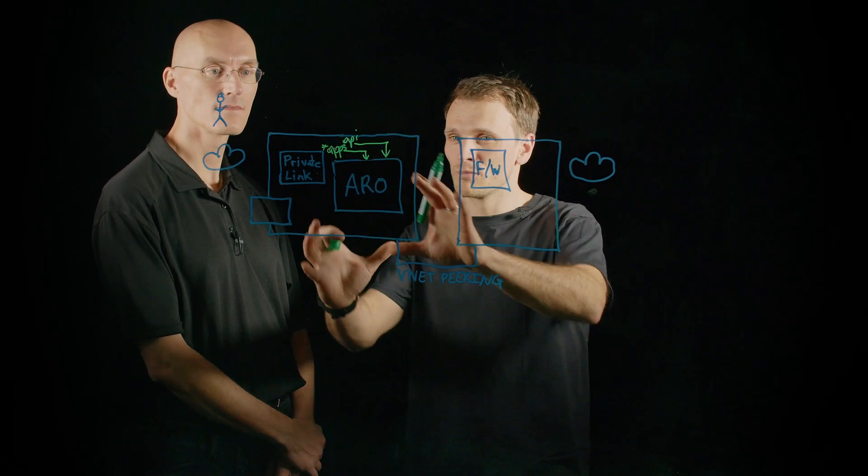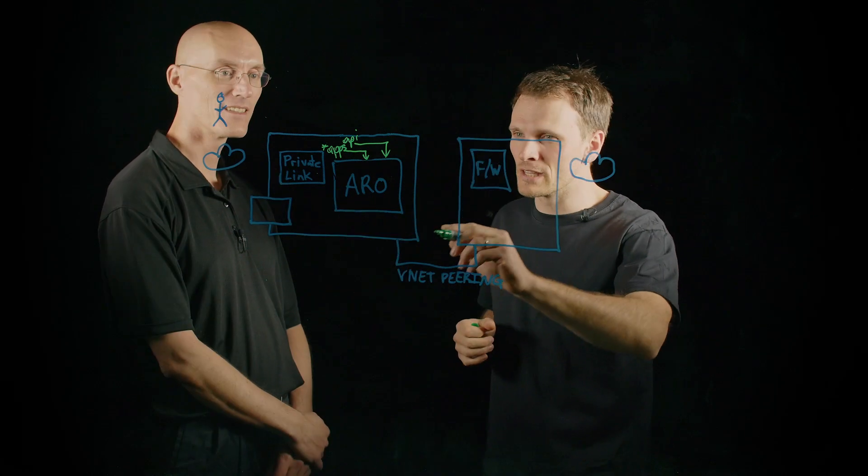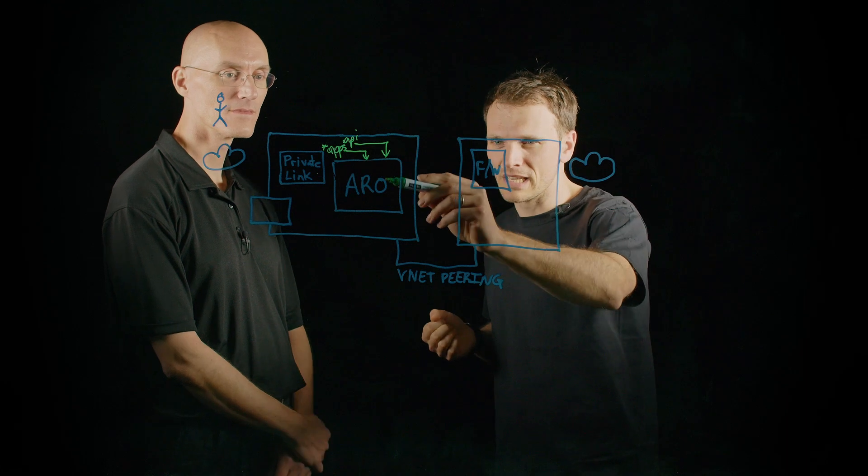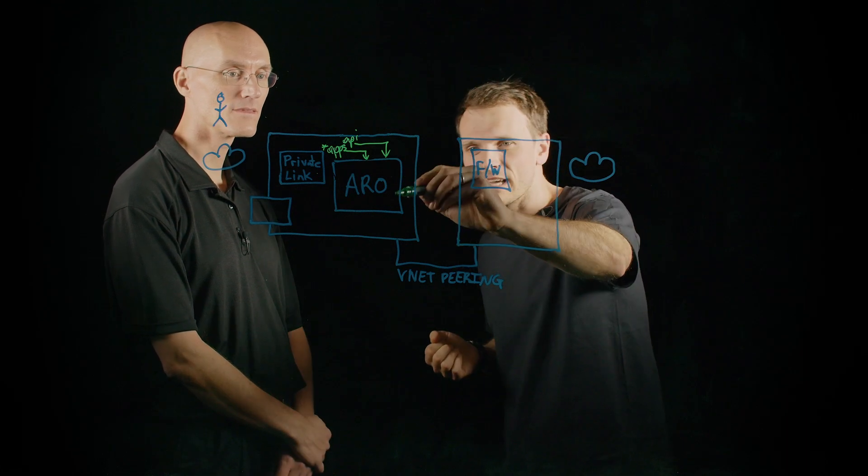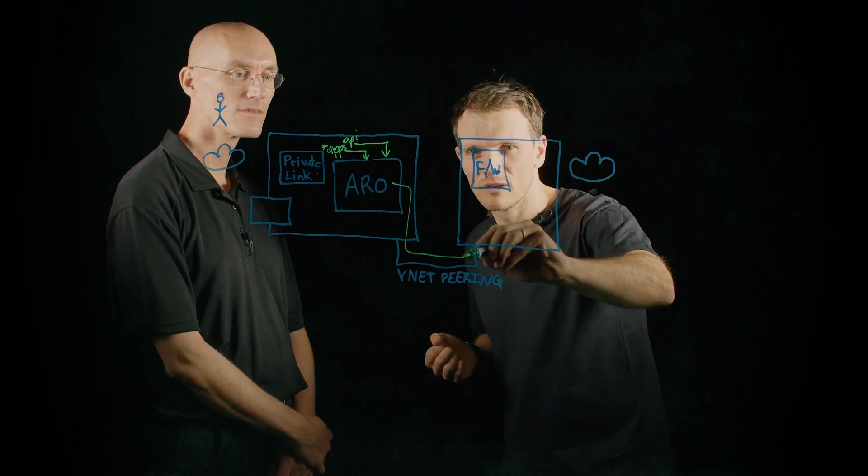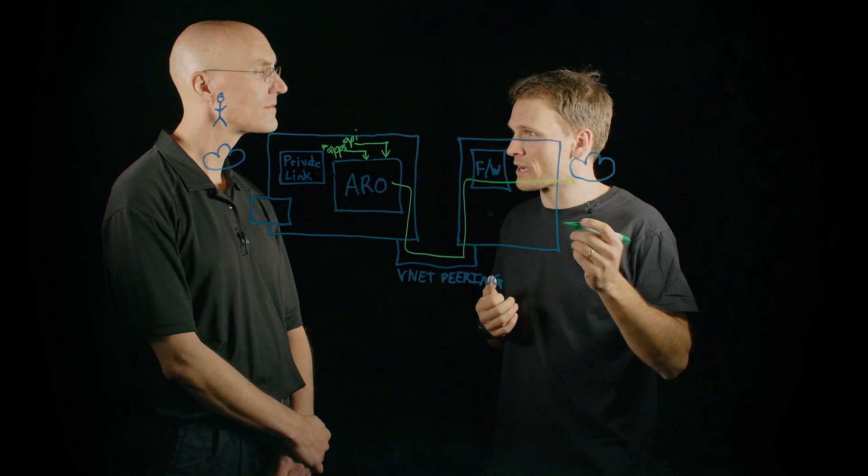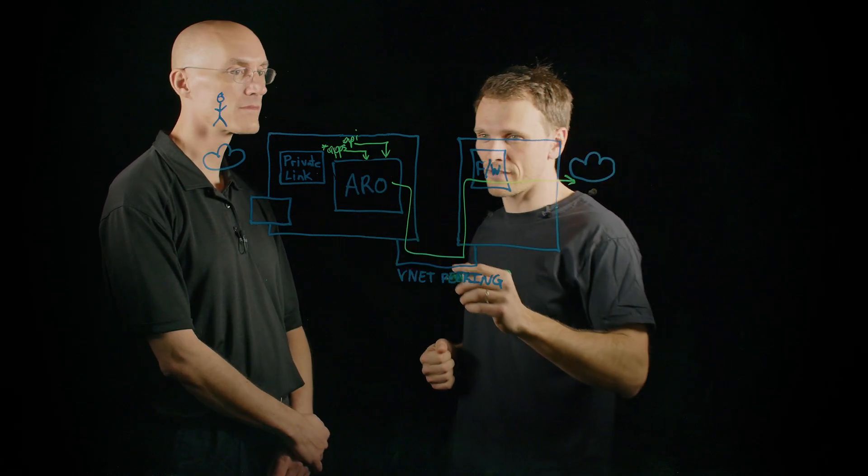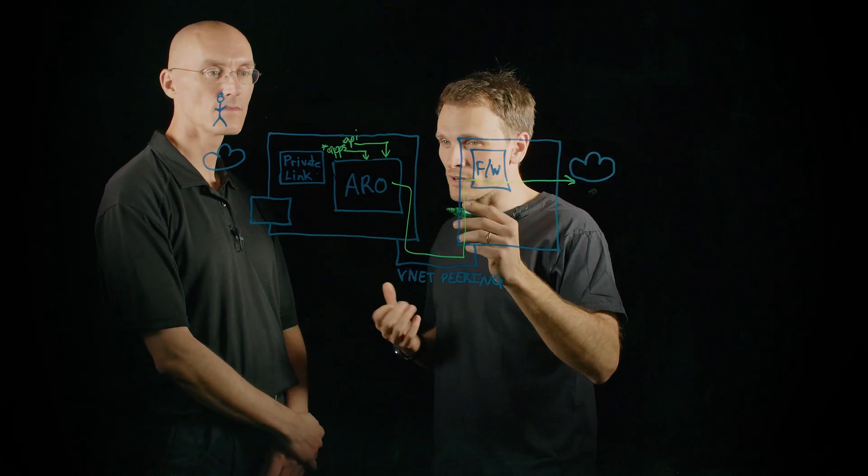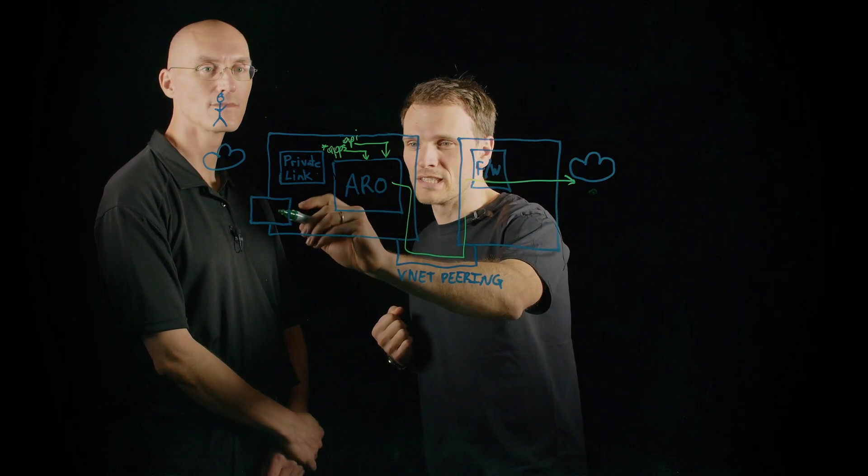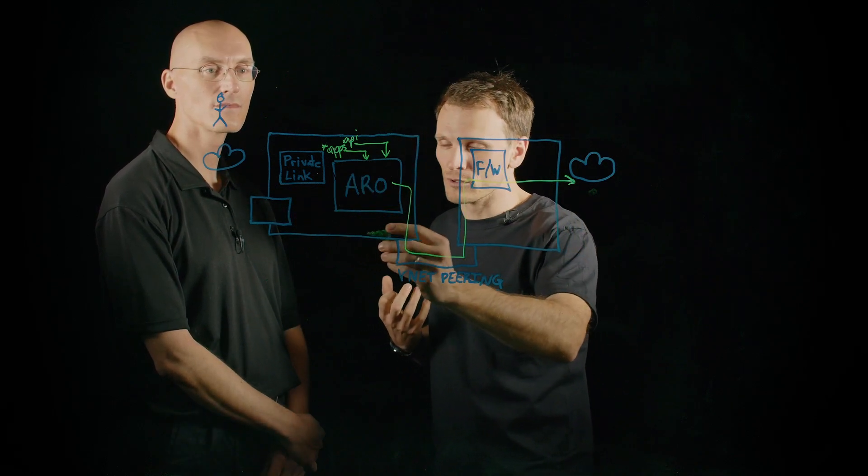Now here we're staying private on the ingress side. And when we talk about egress, the one thing that we often recommend is to route that traffic through a firewall instance and have that inspection happening for the internet bound traffic.